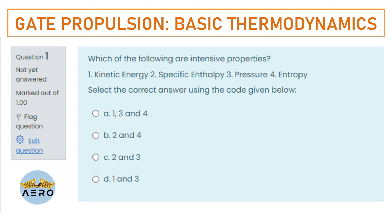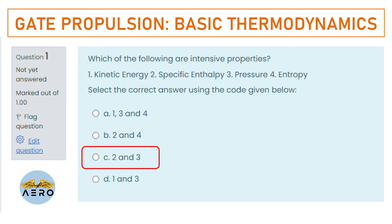As we know, intensive property means it is independent of mass. So wherever there is independence of mass — like specific enthalpy and pressure — those are intensive. When we talk about any kind of energy or entropy, it falls under extensive property. The right option is option C, that is 2 and 3.